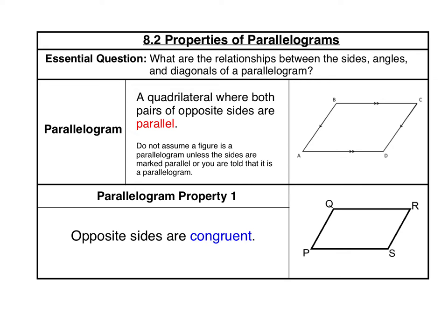Parallelograms have some special properties, and the first property of a parallelogram is that opposite sides are congruent. You should mark those opposite sides congruent on your diagram in your notes. With opposite sides being congruent, that means that PQ and RS are congruent and QR and PS are also congruent. Opposite sides are across from each other in the parallelogram.